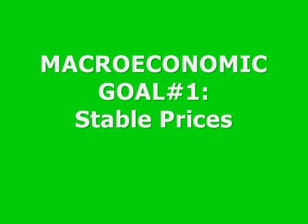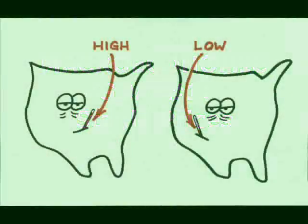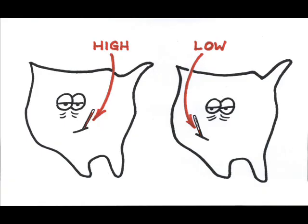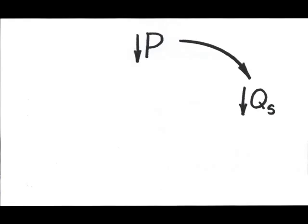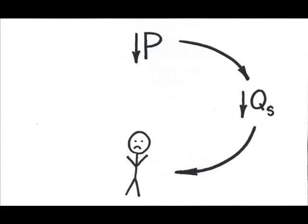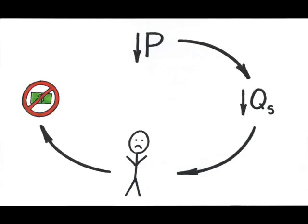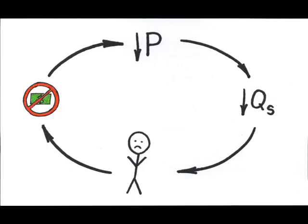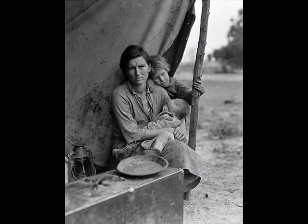Think back to the first macroeconomic goal, stable prices. Notice that the goal is not low prices. Deflation or decreasing prices can be just as dangerous as inflation or increasing prices. Think about this. Lower prices means smaller quantities supplied of all goods and services. This means there's less need for labor, so workers get laid off. Unemployed workers spend less, bringing demand and prices down, which means lower quantities supplied. In fact, the one decade in the 20th century that was characterized worldwide by deflation was the 1930s, the Great Depression.